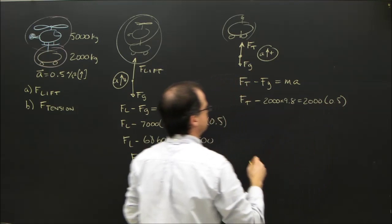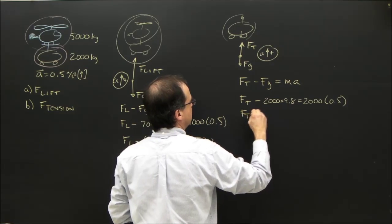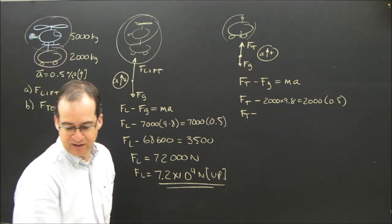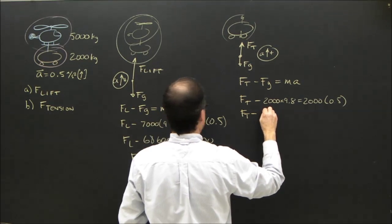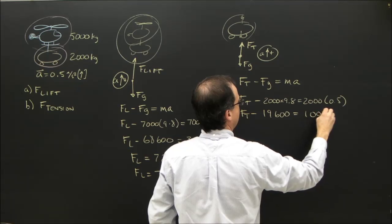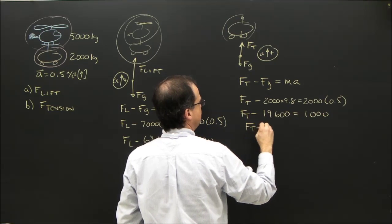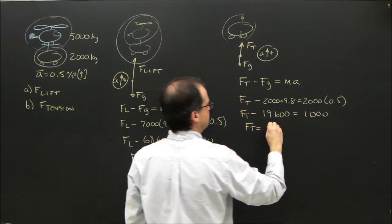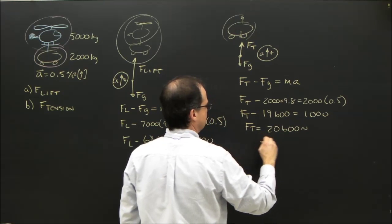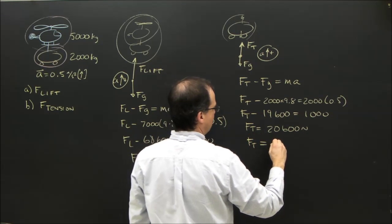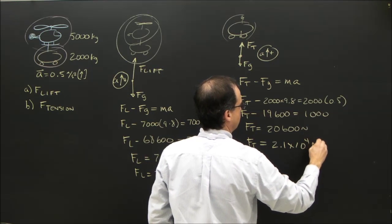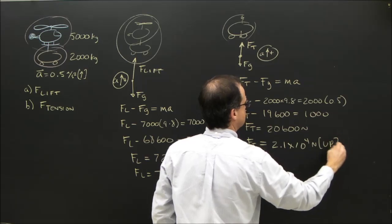So Ft equals 20,600 newtons. Ft equals 2.1 times 10 to the 4 newtons up.